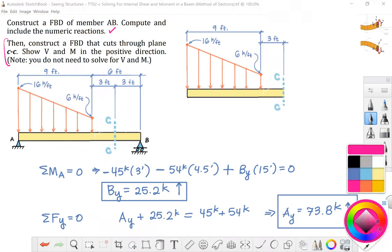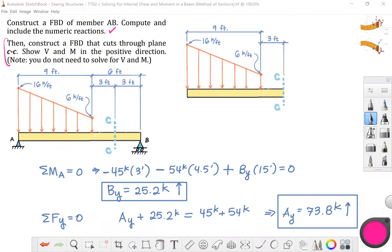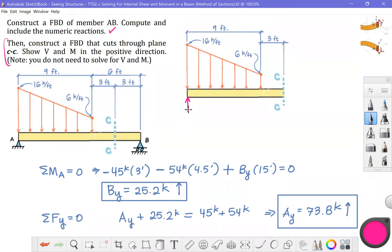That's equal to 73.8 kips. And then at the cut, I need to draw the internal forces in the positive direction. Listen carefully.